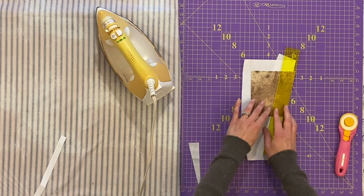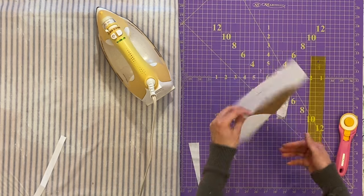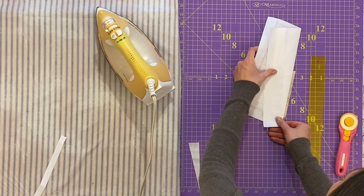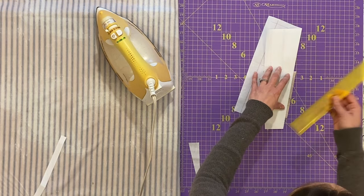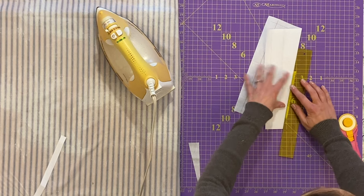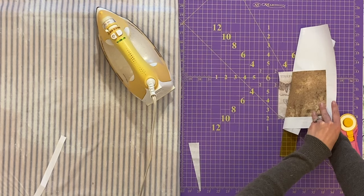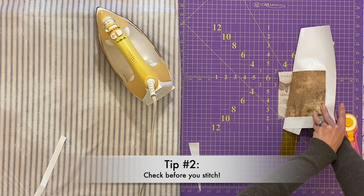Once you've made that cut you can turn your template back the correct way, line up the raw edges that you just cut. At this point I like to check so I will put my quarter inch ruler on top, fold it back and make sure that the direction and the angles are all correct.